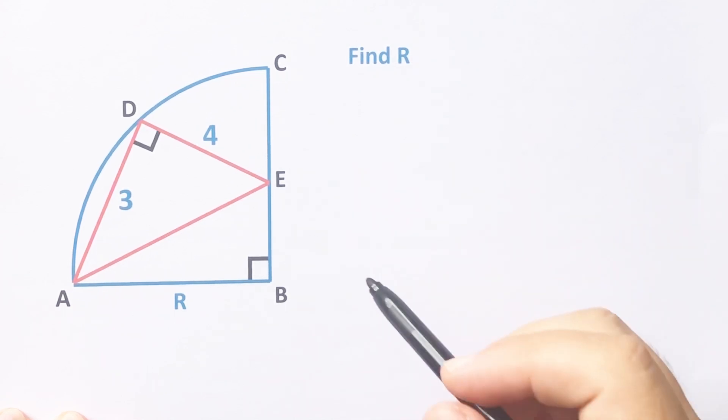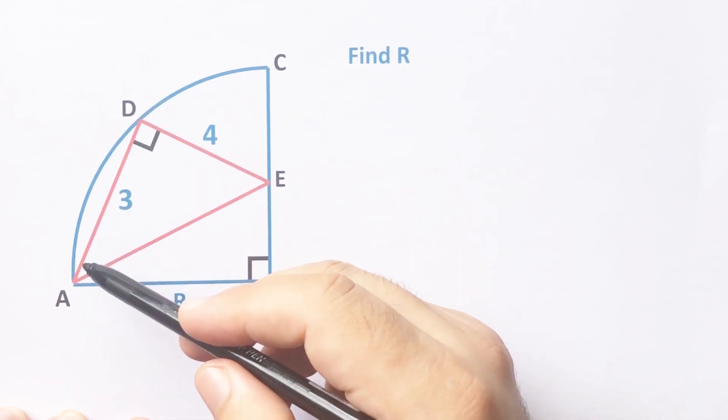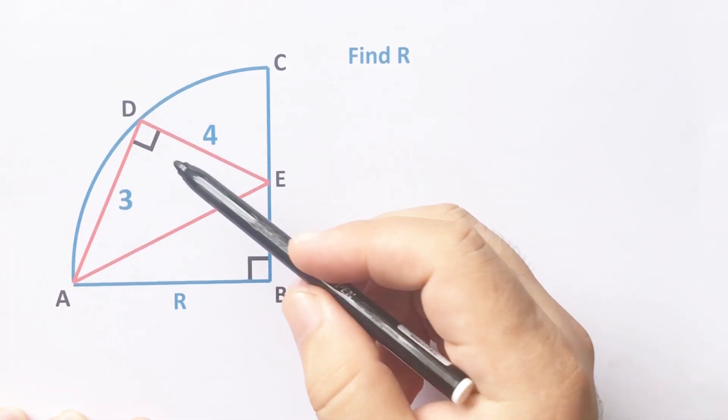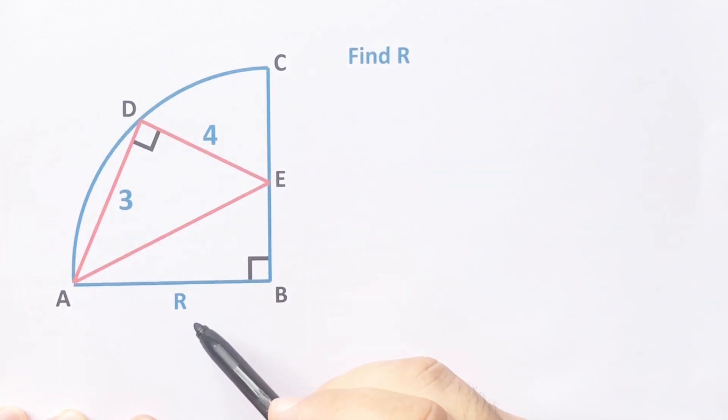Hello everyone, in this video we have one quarter circle. It is 3 here, 4 here, these are 90 degrees, and the radius of this quarter circle is asked. First of all, let's call here x unit.